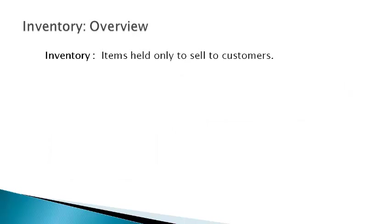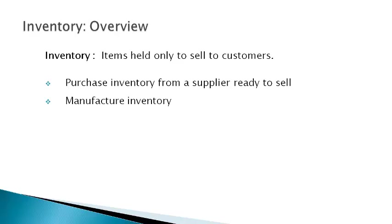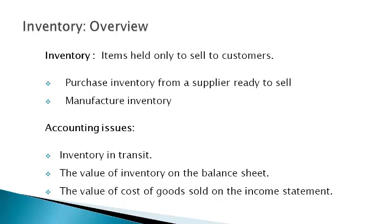Inventory consists of items held only to sell to customers. A company either purchases inventory from a supplier ready to sell or manufactures inventory themselves. Accounting issues associated with inventory primarily relate to inventory in-transit, which is between the seller and the buyer, or determining the value of inventory reported on the balance sheet and the value of cost of goods sold reported on the income statement.